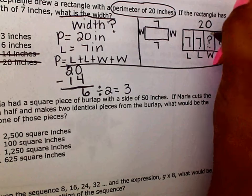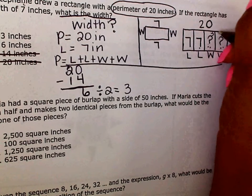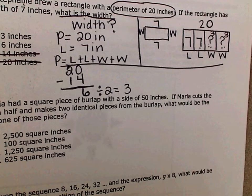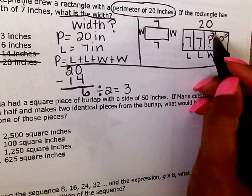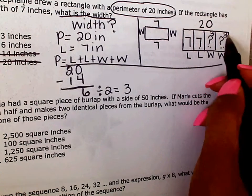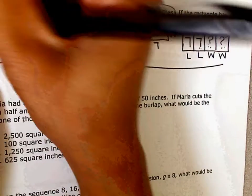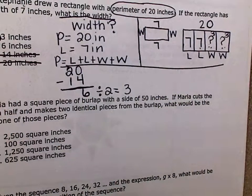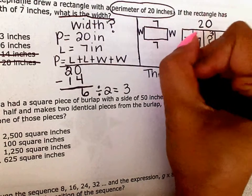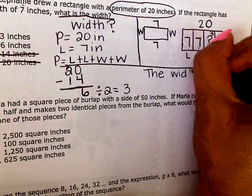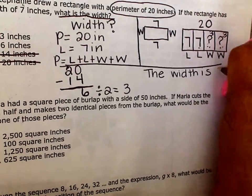So if I put 3 in each of these, now I have 7 plus 3 is 10, plus 7 plus 3 is 10, and that does give me 20. So my complete sentence says, the width is 3 inches.